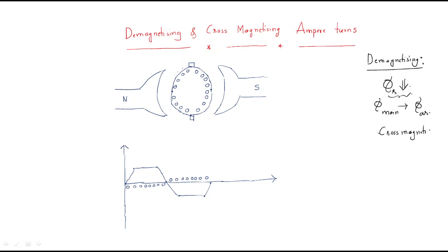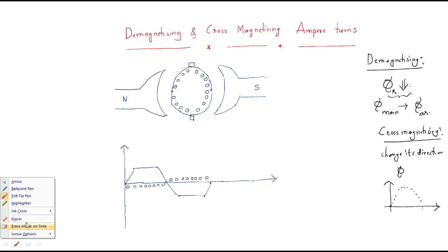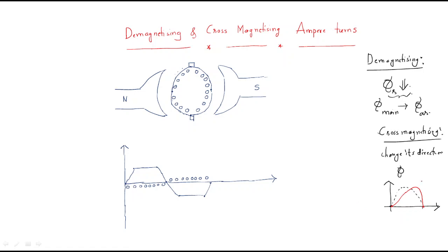What about cross-magnetization? As the name suggests, it will not decrease the flux but will change its direction. Cross-magnetizing effects change the direction of the flux. So here we have some flux that is generally flat, but due to the effect of cross-magnetizing, the flux will vary — it will be changed.